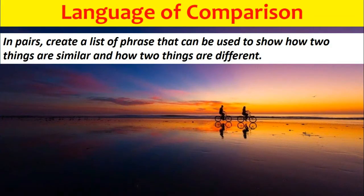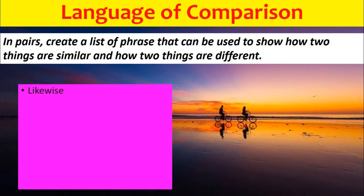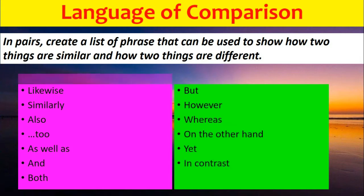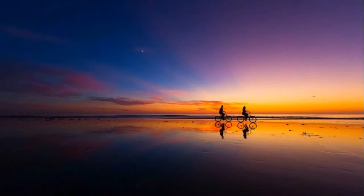For language of comparison, create a list of phrases that can be used to show how two things are similar or different. Phrases showing similarity include: likewise, similarly, also, as well as, and both. Phrases showing difference include: but, however, whereas, on the other hand, yet, and in contrast. Left is same, right is different — try to use these in your answer to show the examiner you are comparing and contrasting.